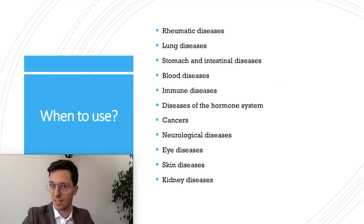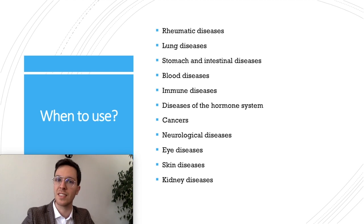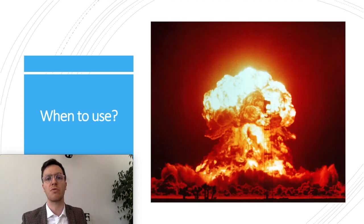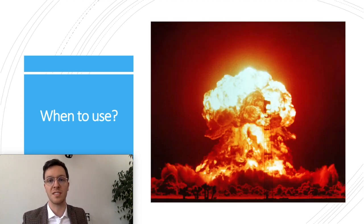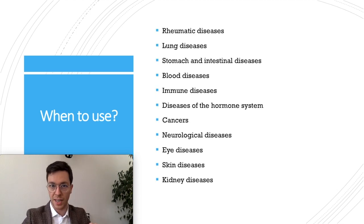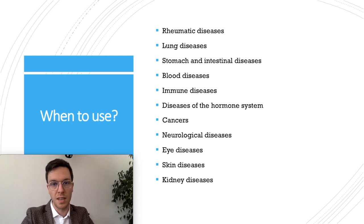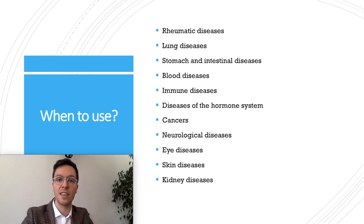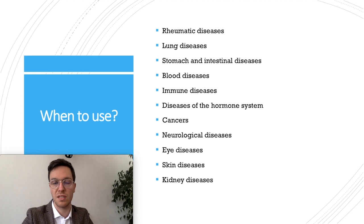Prednisone has many many use cases and it can be used in almost any disease where your body has a strong reaction against the disease — a strong inflammation — and then prednisone can be used to lower the reaction of your body so you will have less symptoms. I listed here the most common groups and will just name some diseases which belong in each group.